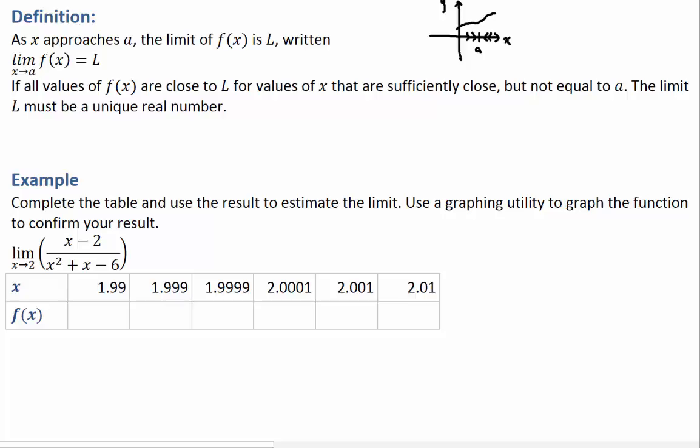For example, if your function would be somewhere down here, as you travel in the x-coordinate towards a, your y values would be getting closer and closer to this value L. As you go here, you're going to be a little below L, and if you go here, you're going to be a little above L.